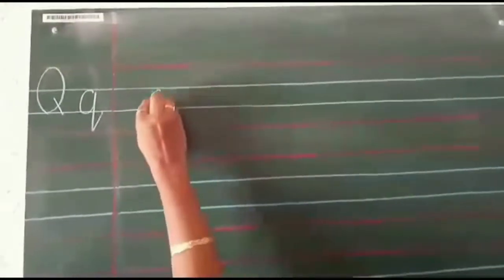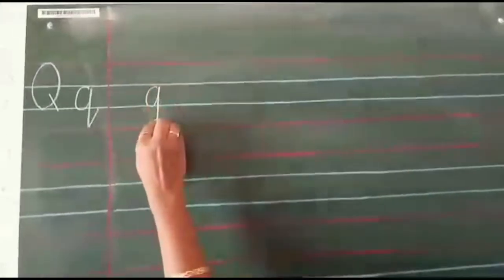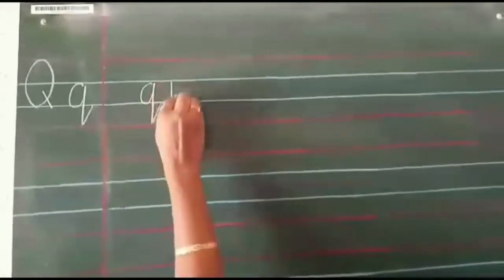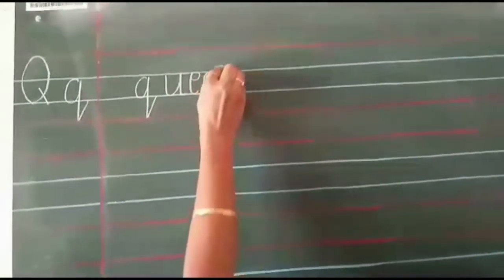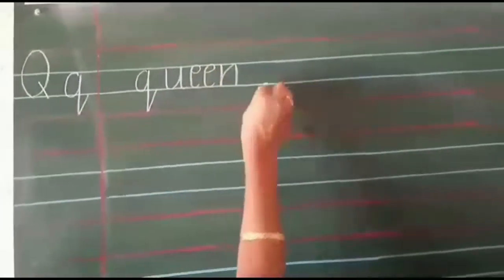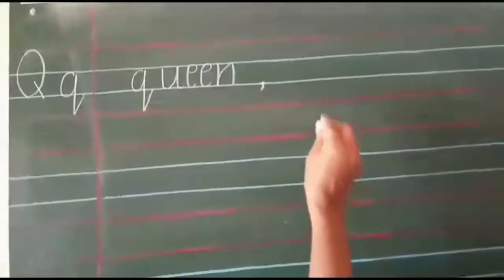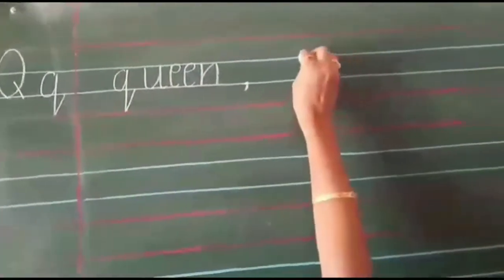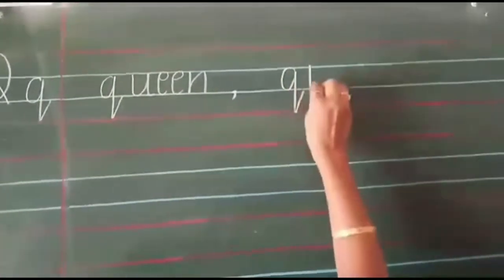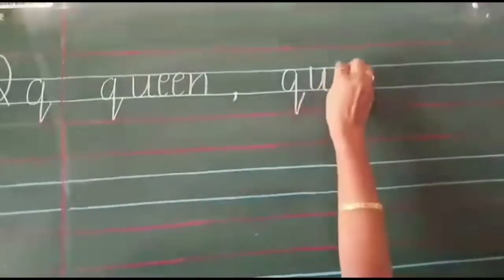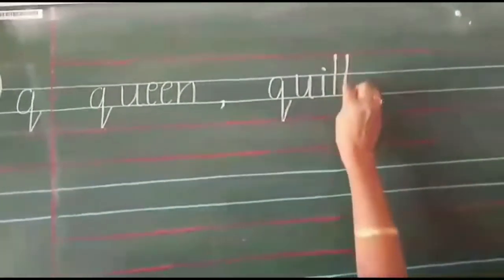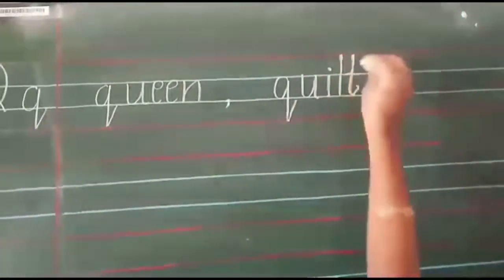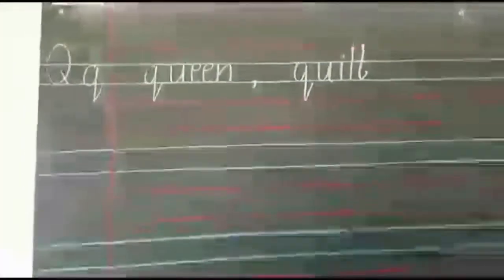So we will write the spelling of queen: Q, U, E, E, N — queen. Comma. Q, U, I, L, T — quilt. Okay.